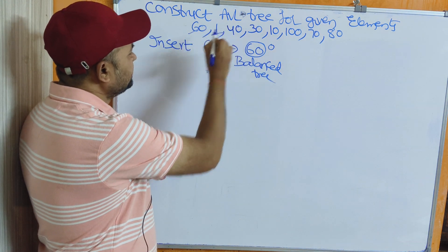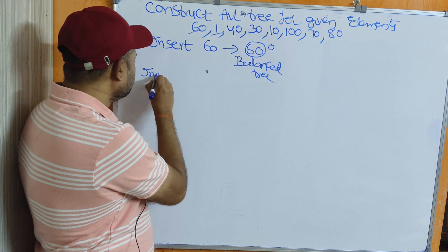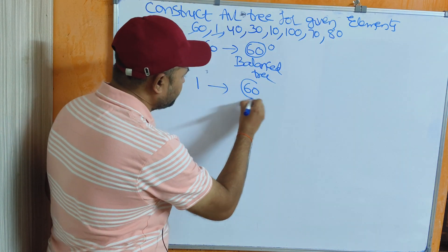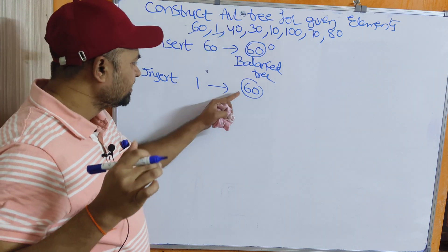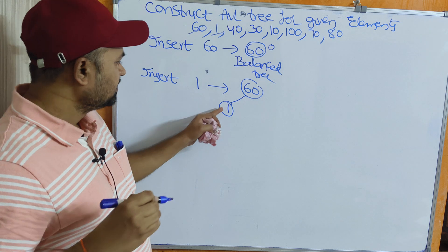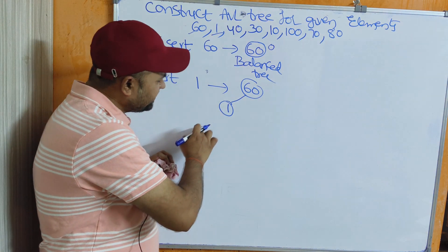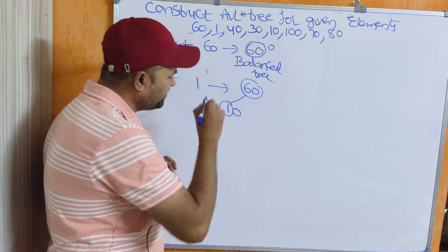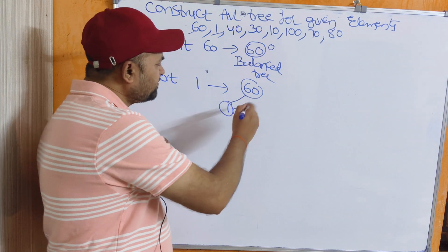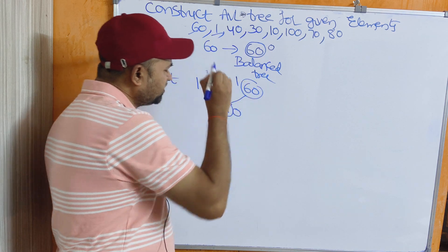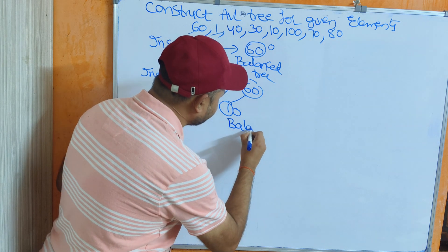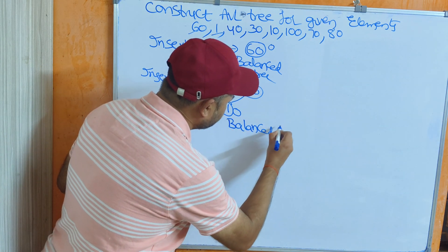Insert 60 is over. Next, insert 1. Compare 1 with 60 — 1 is less than 60, so it will become the left child. Calculate the balance factor: left subtree height is 1, right subtree height is 0, so 1 minus 0 equals 1. Balance factor is 1, which means this is a balanced tree.